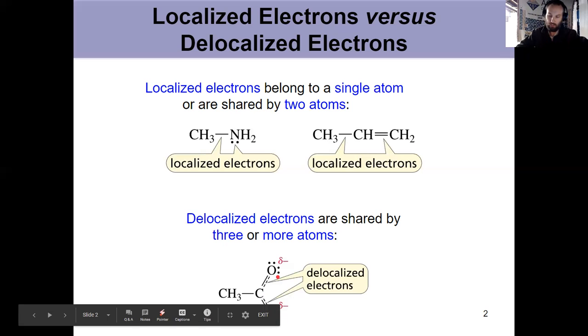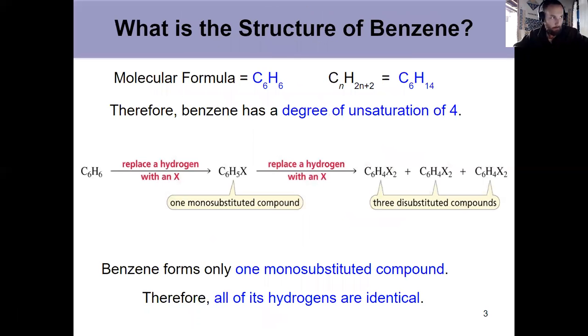So before we get to that understanding, let's start by thinking about benzene. And the original structure of benzene was a mystery, because benzene came to exist before delocalized electrons had been discovered. And there was some knowledge at the beginning, we've got a molecular formula of C6H6. Now, if we had a saturated hydrocarbon, it would be C6H14, meaning we have four degrees of unsaturation.